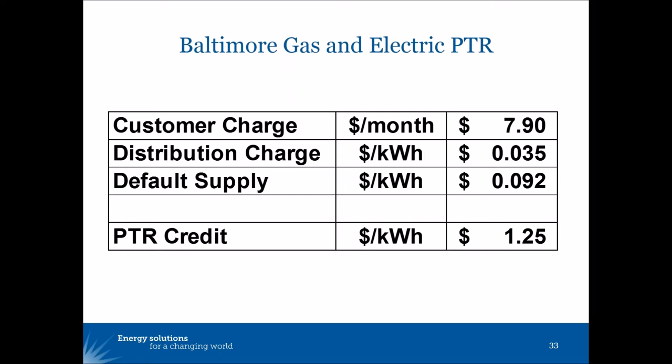They'll also get more immediate feedback a couple of days after the event — a text or email showing how much they saved by reducing their energy during the peak. Results to date show that more than three-fourths of customers do reduce their usage below baseline during these events. The average customer saves about five to seven kilowatt hours per event, and at $1.25 rebate per kilowatt hour, they're saving $6 to $10 per event. BG&E had four events this year, so this is knocking roughly $40 a year off the customer's bill.